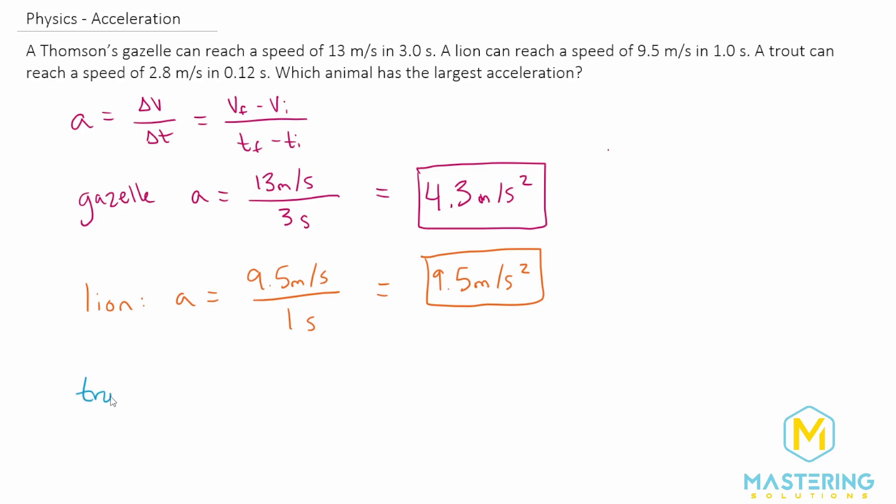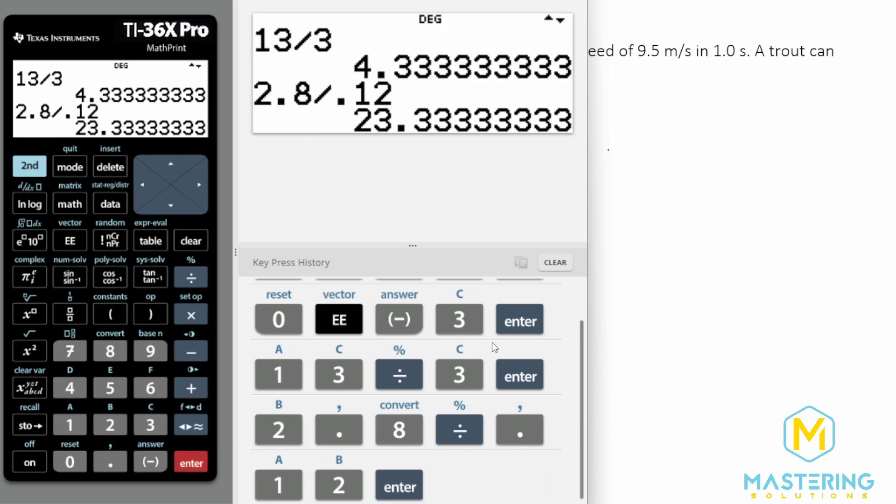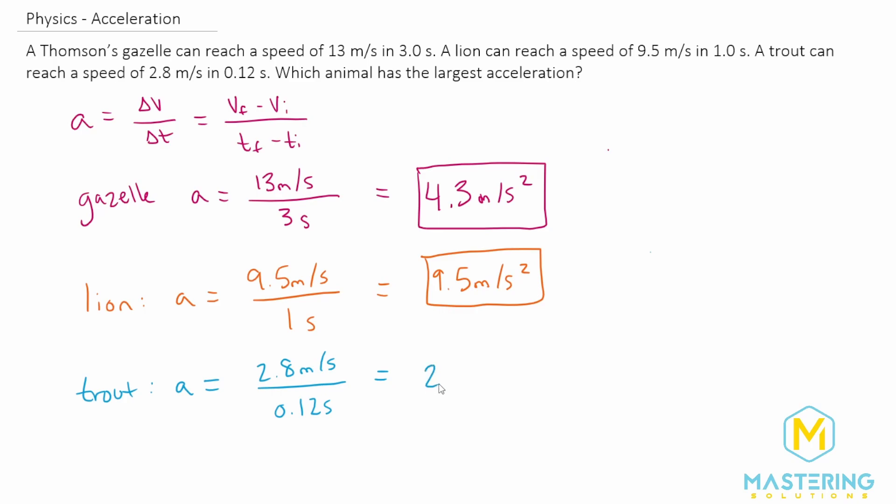Now let's do the last one, the trout, which has a change in velocity of 2.8 meters per second over a time of 0.12 seconds. 2.8 divided by 0.12 gives us 23.3, so we'll round that to 23 meters per second squared.